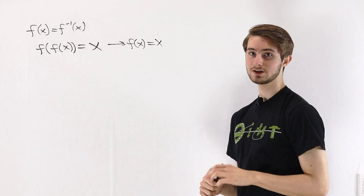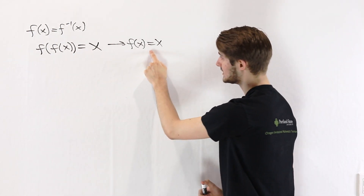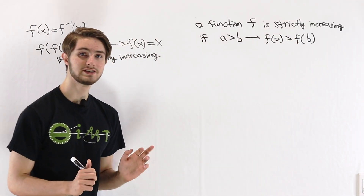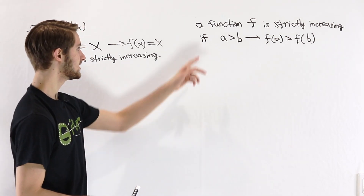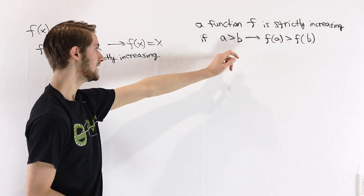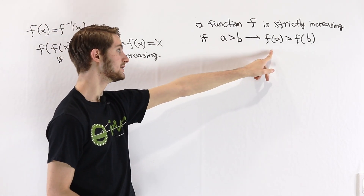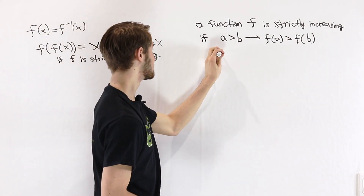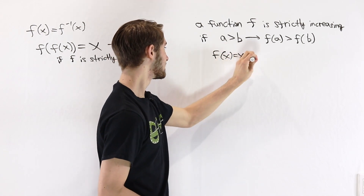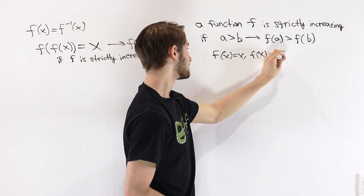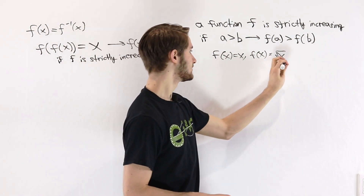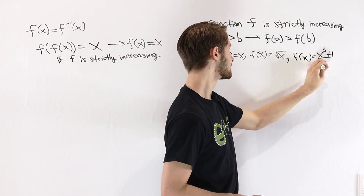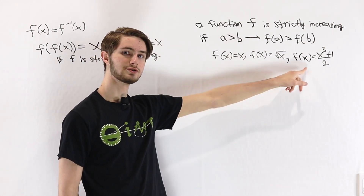In other words, if our function is strictly increasing, then this equation tells us that f(x) must equal x. In order to understand why this is true, we first need to look at the definition of strictly increasing. We say that a function f is strictly increasing if a being greater than b means that f(a) must be greater than f(b). Some examples of strictly increasing functions are f(x) = x, f(x) = √x for positive numbers, or in our case, f(x) = x³ + 1/2. This third function is the one that shows up in the coffin problem.